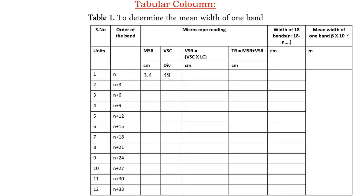This is the tabular column to determine the mean width of one band. For the Nth fringe, MSR is 3.4 cm and VSC is 49 divisions. For the N+3rd fringe, MSR is 3.45 and VSC is 42 divisions. For the N+6th fringe, MSR is 3.5 and VSC is 45 divisions. For the N+9th fringe, MSR is 3.55 cm and VSC is 40 divisions.